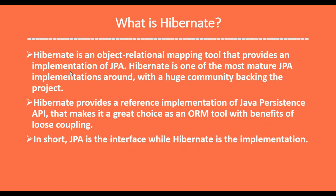So what is Hibernate? Hibernate is an Object Relational Mapping tool that provides an implementation of JPA. Since JPA is just a specification, it doesn't have any underlying implementation. Hibernate is actually the ORM tool that provides an implementation of JPA. Hibernate is one of the most mature JPA implementations around, with a huge community backing the project. Hibernate provides a reference implementation of JPA, which makes it a great choice as an ORM tool with the benefits of loose coupling.